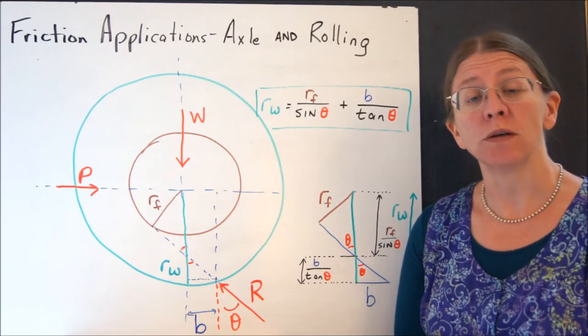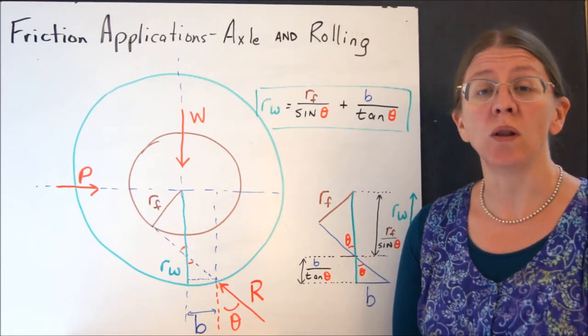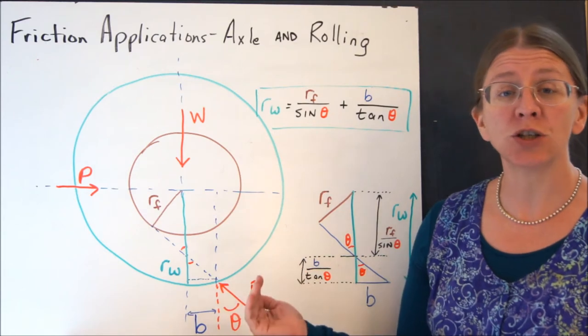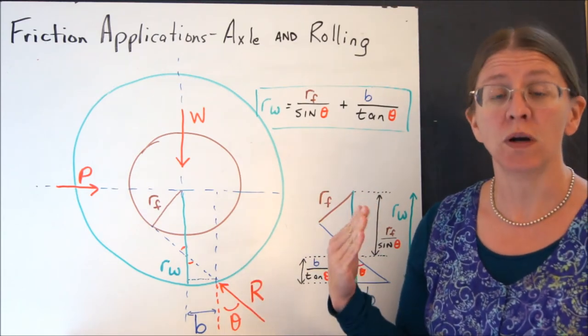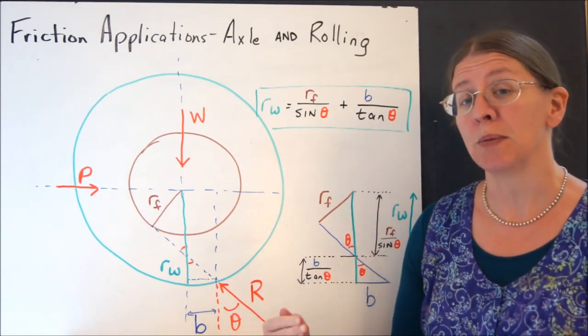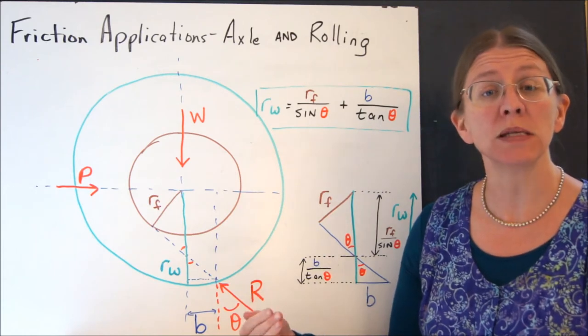Remember when we were talking about rolling friction, the whole goal of it was to simply shift the reaction a distance over so that your equilibrium could work, so that the moments could sum to zero.